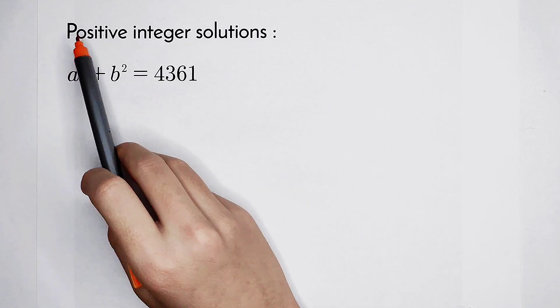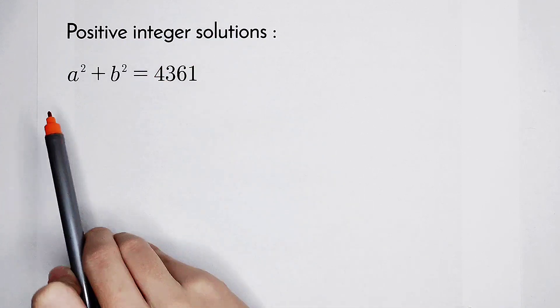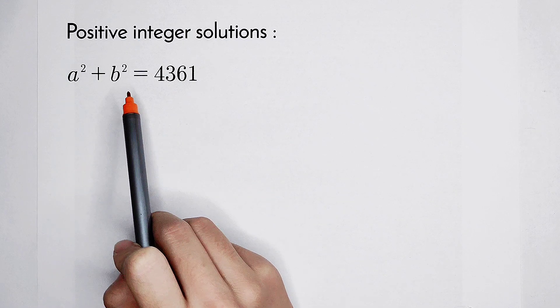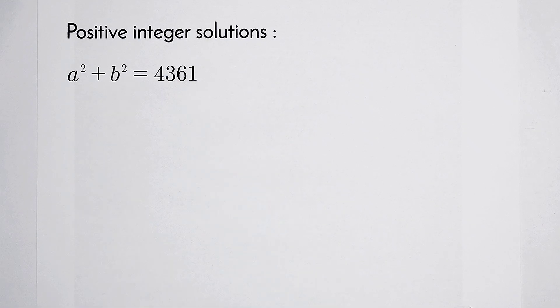Welcome back to Math Window. We'll find some positive integer solutions of this equation: a squared plus b squared equals 4,361.